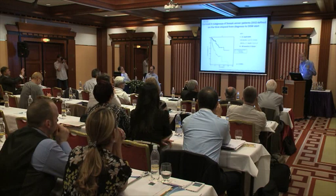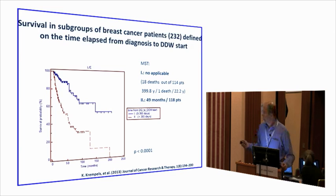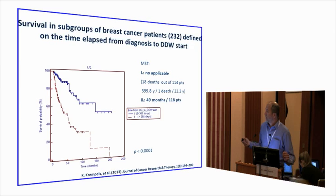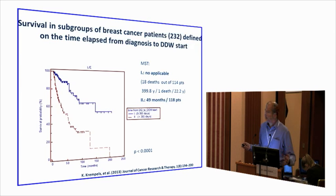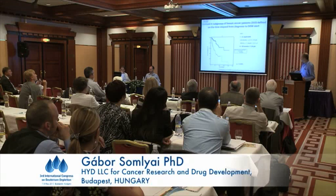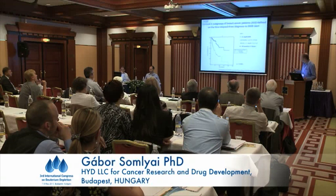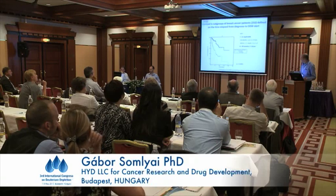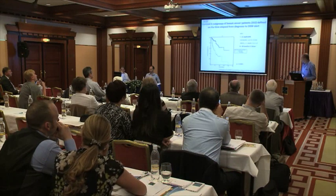Looking at a homogeneous group: among 232 breast cancer patients, those who started DDW within one year versus after one year — of 114 patients who started early, we only lost 18 patients, meaning one patient was lost roughly every 20-plus years given the cumulative follow-up of almost 400 years. Those who started DDW treatment later than one year had a median survival time of 49 months.